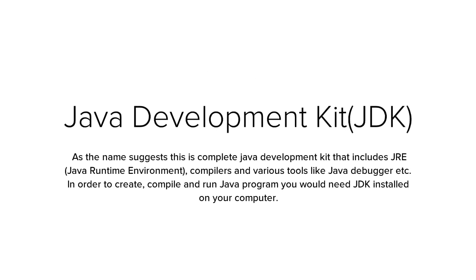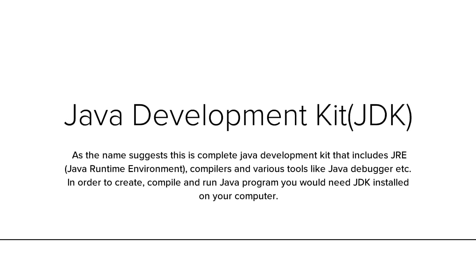Java Development Kit. As the name suggests, this is a complete Java development kit that includes JRE, that is Java Runtime Environment, compilers and various tools like Java debugger, etc. In order to create, compile and run a Java program, you would need JDK installed in your computer.